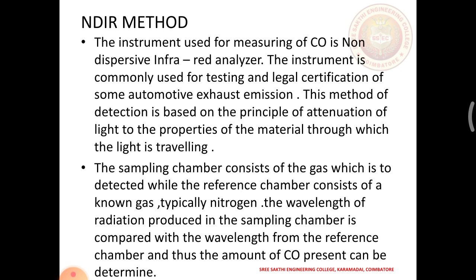NDIR method: the instrument used for measuring CO is non-dispersive infrared analysis, commonly used for testing and legal certification of automotive exhaust emissions. This method is based on the principle of attenuation of light through the material being measured. The sampling chamber contains the gas to be detected, while the reference chamber contains a known gas, typically nitrogen. The wavelength of radiation in the sampling chamber is compared with that from the reference chamber to determine the amount of CO present.